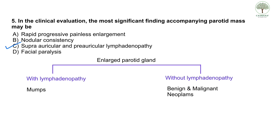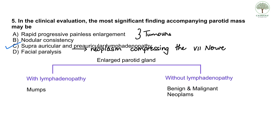Nodular consistency is usually seen in tumors, and further investigations are required. Facial paralysis is definitely due to encroachment of a tumor onto the facial nerve, compressing it. Rapid progressive painless enlargement is usually not characteristic of mumps. Out of all the features given, only C — lymphadenopathy — points towards a different diagnosis, and that's why it is considered the most significant finding.